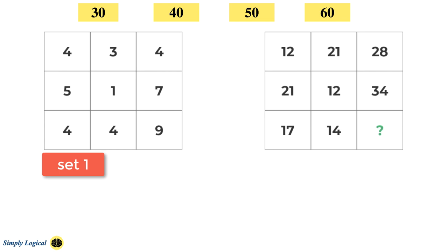But for now, let's add all the numbers in the row and see if we can deduce some kind of relation between the numbers. In set 1, sum of all the numbers in first row is 4 plus 3 plus 4 which is equal to 11. And sum of all the numbers in second row is 5 plus 1 plus 7 equals 13. And sum of all numbers in third row is 4 plus 4 plus 9 which is equal to 17.